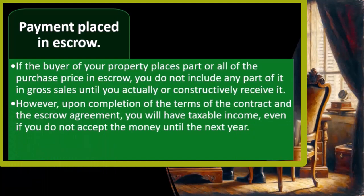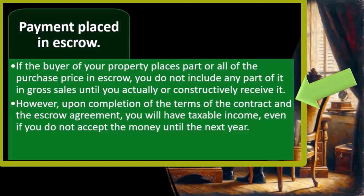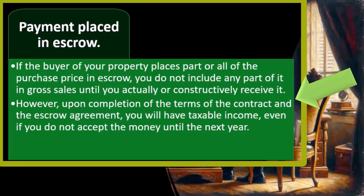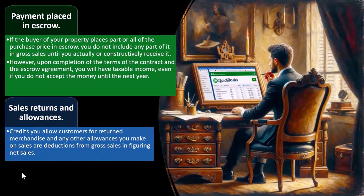However, upon completion of the terms of the contract and escrow agreement, you will have taxable income even if you do not accept the money until next year. In other words, once you've completed the contract and the money is basically available to you and you can access it, then even on a cash-based system, if you choose not to transfer it from the escrow account to your own account even though you have the capacity to do so, you have constructively received the income at that point and must still record it as income when it becomes available to you.